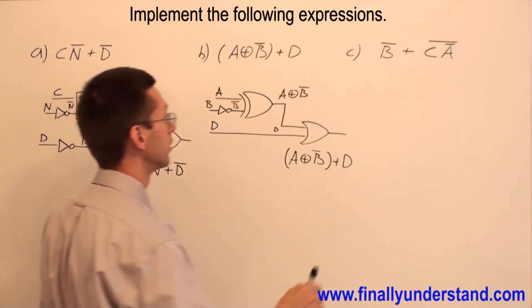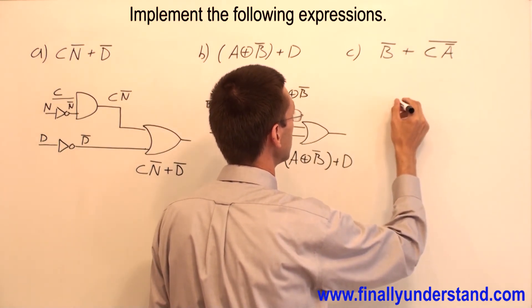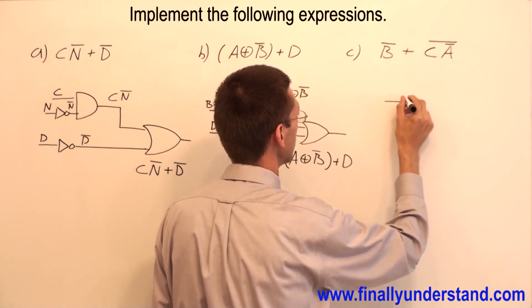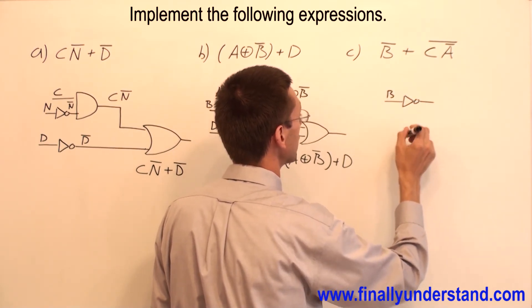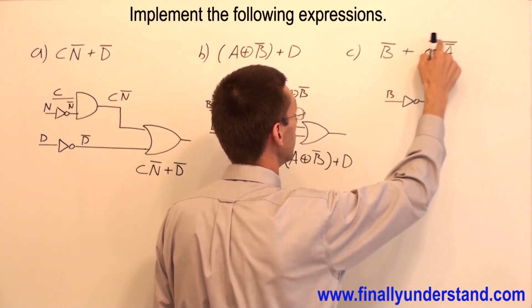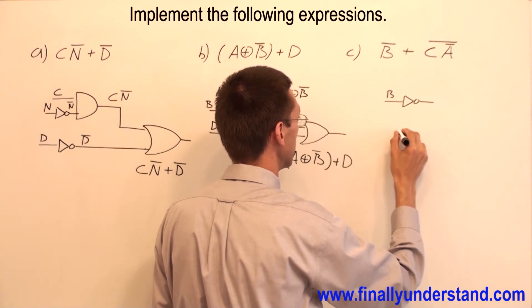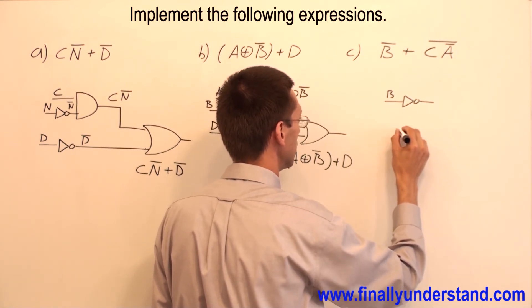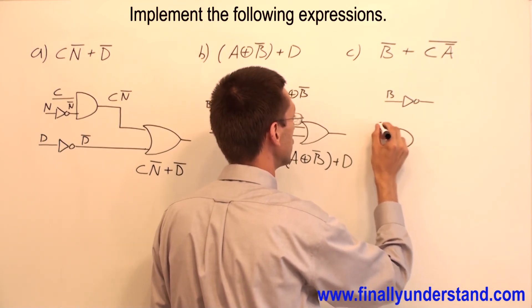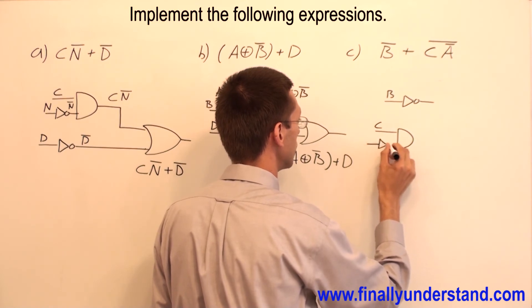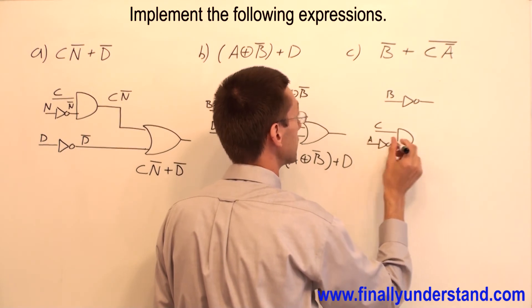Let's check example C. I have B̄. So I'm going to have an inverter. This is my B. And I have an AND function with the bar. This is nothing else, just the NAND. Remember, this is NAND. So I'm going to have input C. Input A will go with the inverter because I have this short bar over here. This is A.